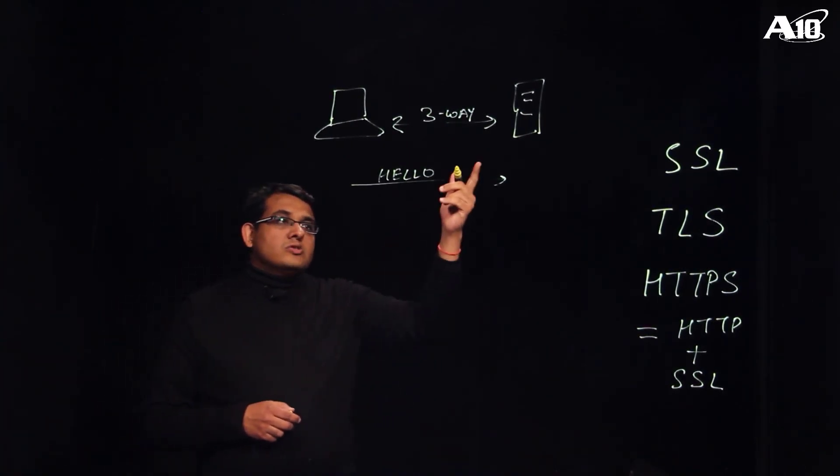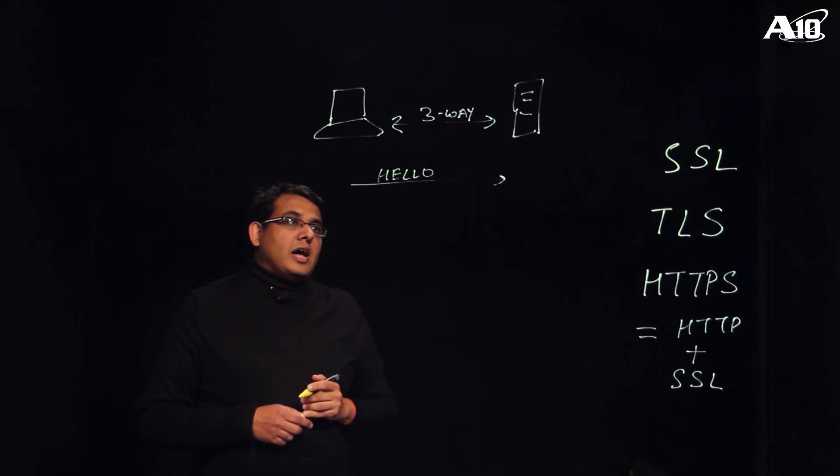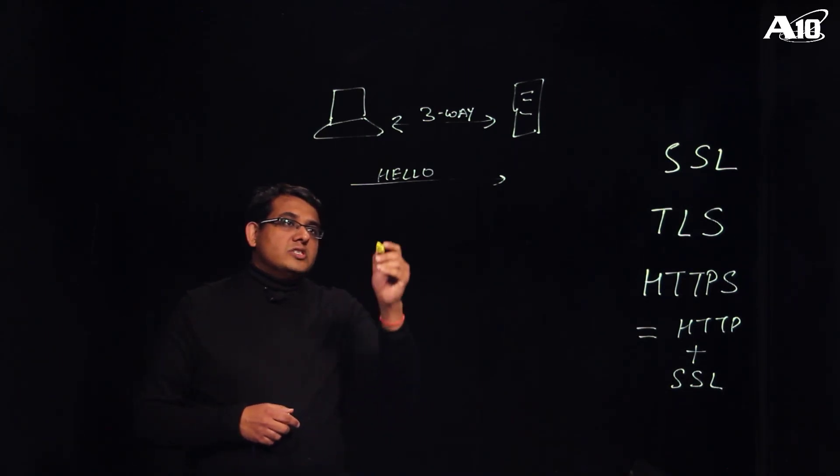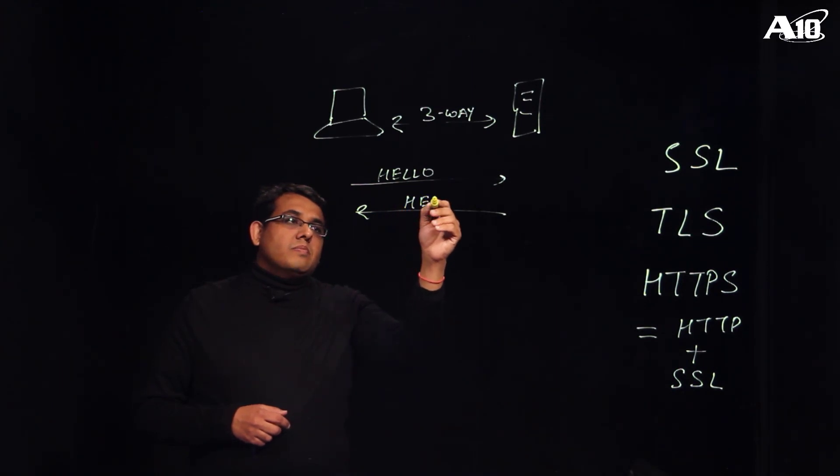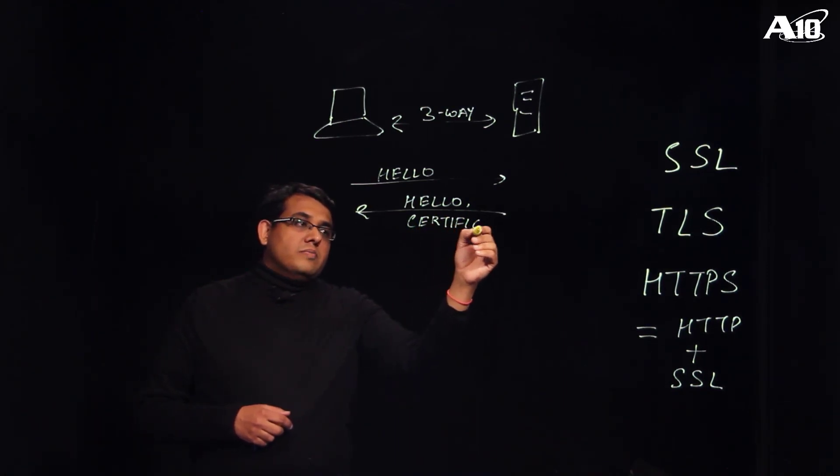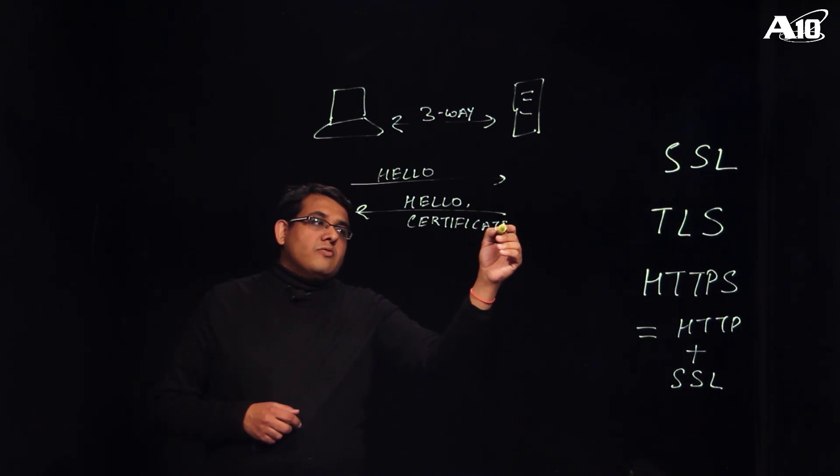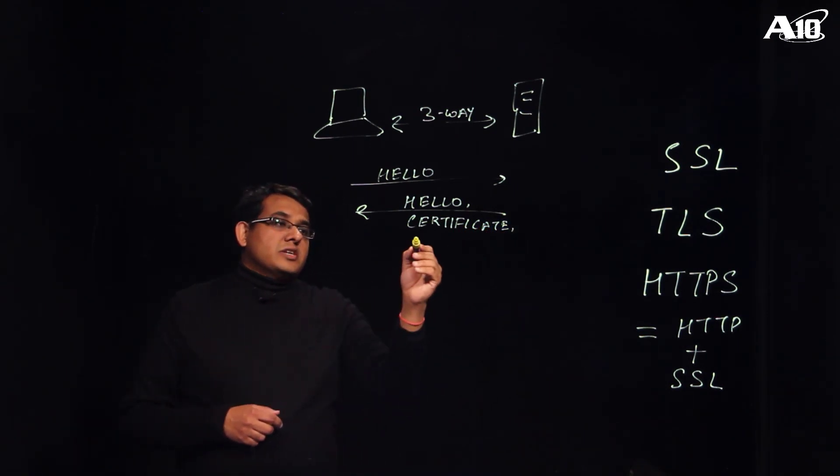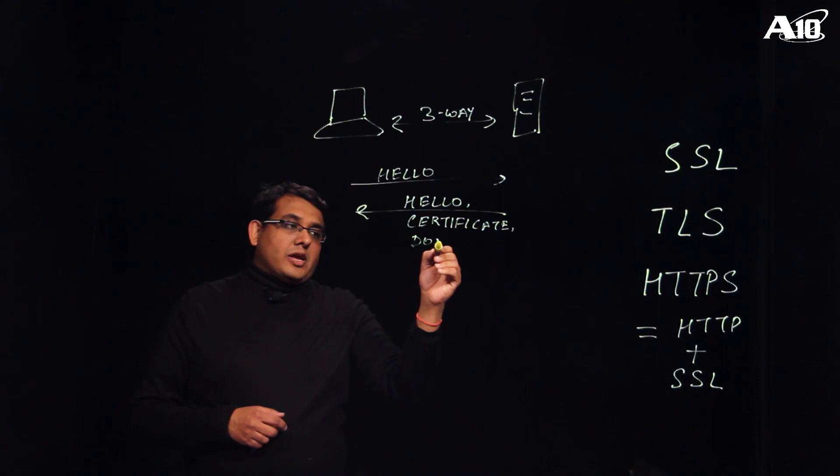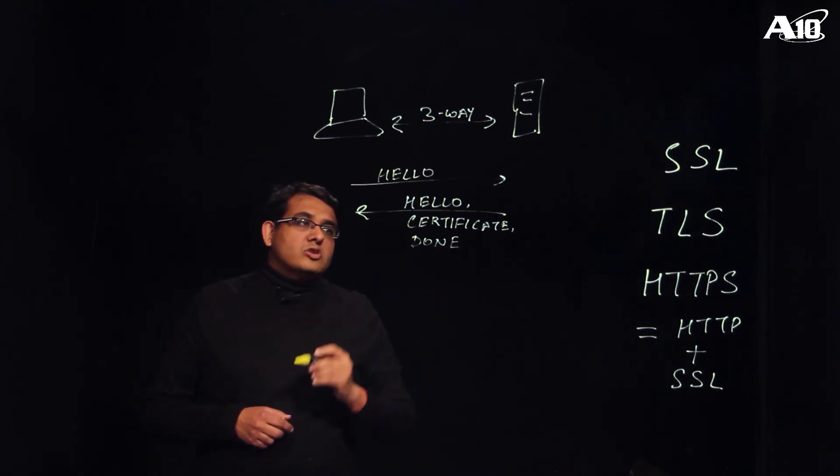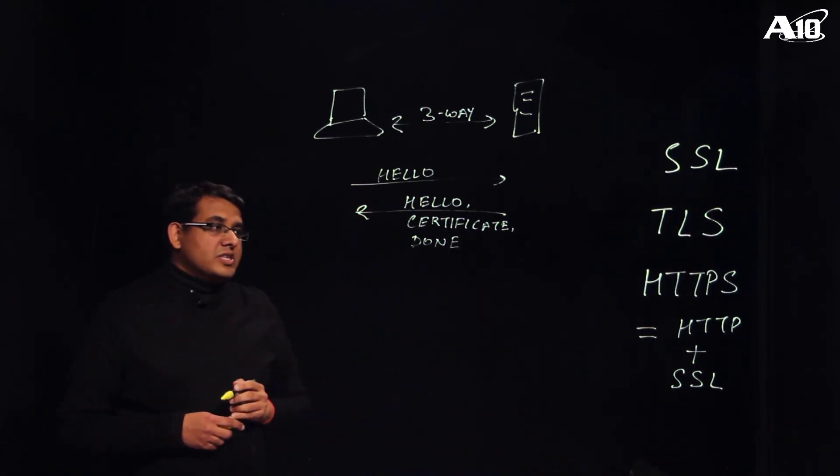The server will choose the highest SSL version ID as well as one of the supported cipher suites and send it back in its hello message to the client. Along with it, it will also send its certificate which can be used by the client to verify the identity of the server. And finally, the server will send a done message back to the client. All these three messages may be encapsulated within the same IP packet.